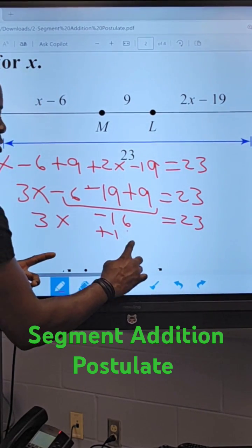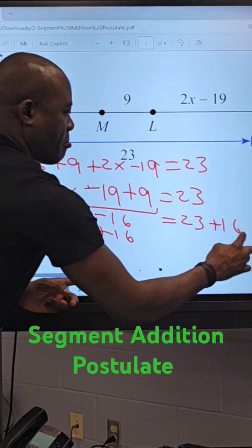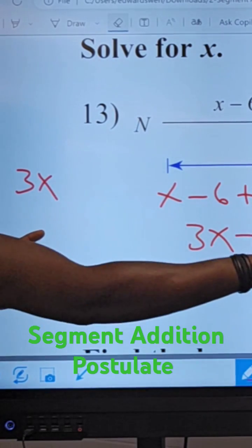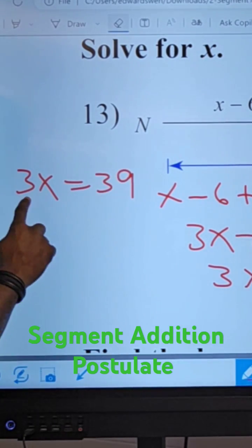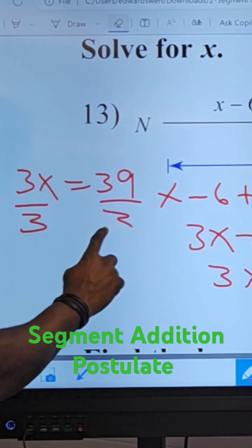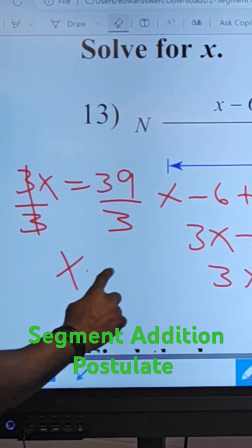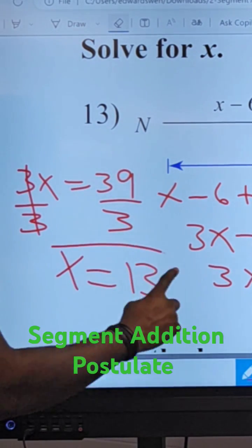Let's add 16 to both sides. 3x equals 39. Dividing both sides by 3, x has a value of 13.